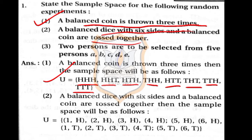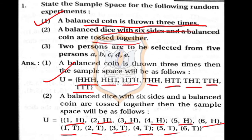You can get head on the coin, giving sample points: 1H, 2H, 3H, 4H, 5H, or 6H. Or you can get tail on the coin, giving: 1T, 2T, 3T, 4T, 5T, and 6T. So this will be the sample space of the second part.